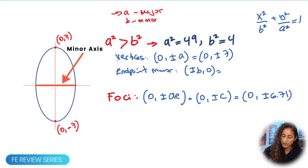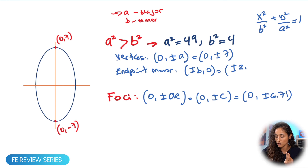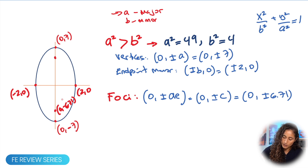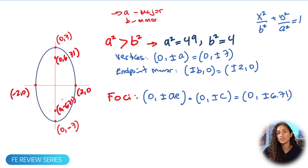The endpoints of the minor axis are at (±B, 0). B equals the square root of 4, which is 2, so the endpoints are at (−2, 0) and (2, 0). The foci are at (0, −6.71) and (0, 6.71) — the foci always lie on the major axis. Since our major axis is Y, the foci have the form (0, ±A·e). For a horizontal ellipse they would be (±A·e, 0).